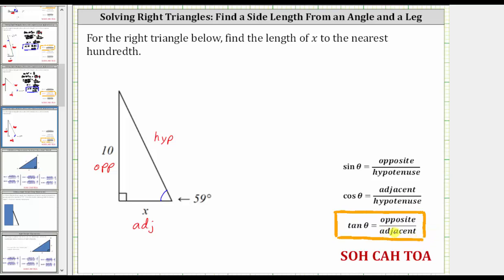Using this equation in the given right triangle, tangent 59 degrees equals the ratio of the opposite side to the adjacent side, which gives us 10 divided by x. Now we need to solve this equation for x to determine the length of this side.